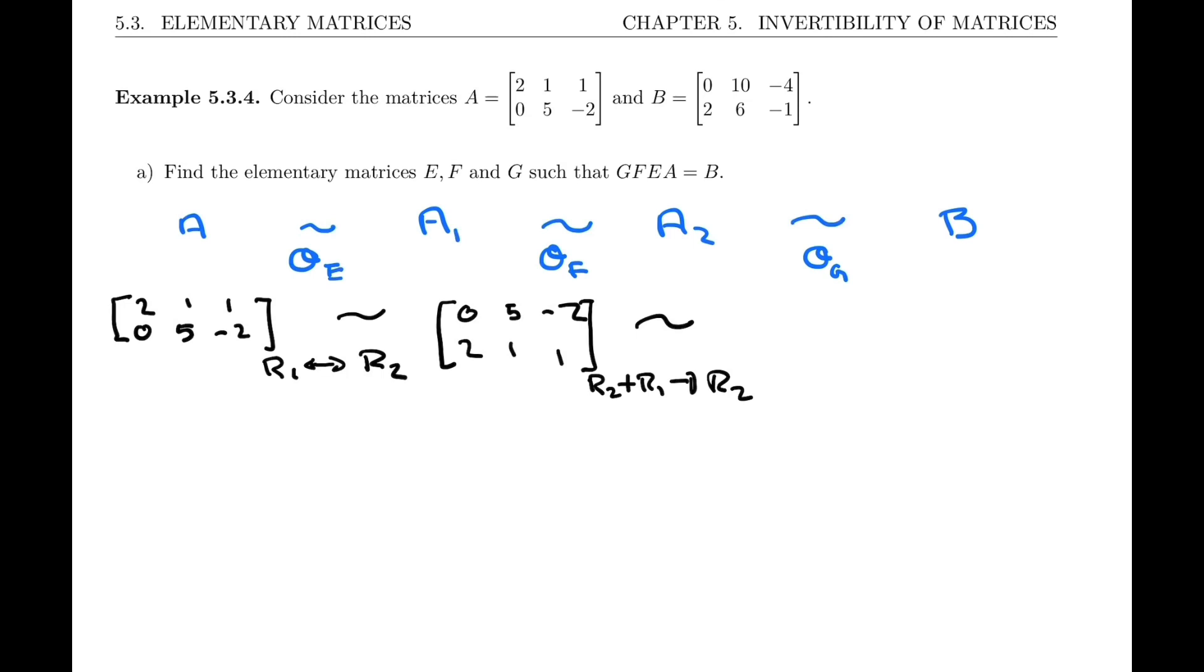You can see why, so I'm trying to get to 2, 6, minus 1. So 0, 5, minus 2, 2, 6, minus 1.